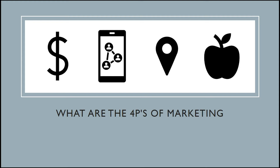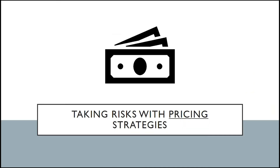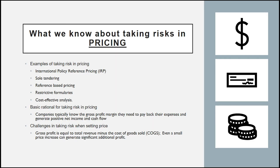Today, I will discuss various methods of developing a marketing design and risks associated with the four Ps. I'll start with risks and pricing strategies. When companies take risks with pricing, they are mostly playing around with new ways to establish price. Companies are willing to take risks with pricing as they generally know the gross profit margin they need to acquire to pay back their expenses, so they distribute their funds in a way that saves them from total loss.